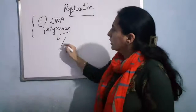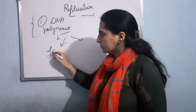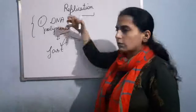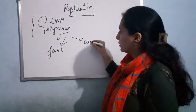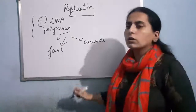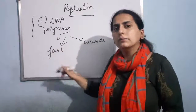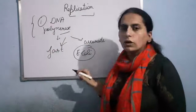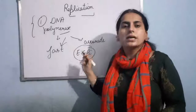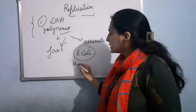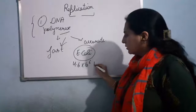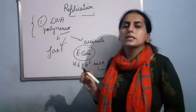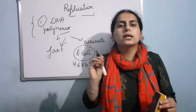This DNA polymerase works very fast, and although it is working very fast, its polymerization is quite accurate. If I talk about the speed of this enzyme — let me give you the example of E. coli. The total number of base pairs present in E. coli is 4.6 × 10⁶. In E. coli, DNA replication completes in 38 minutes.